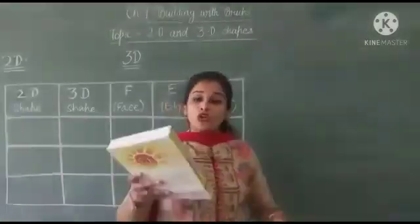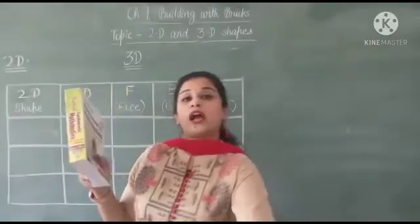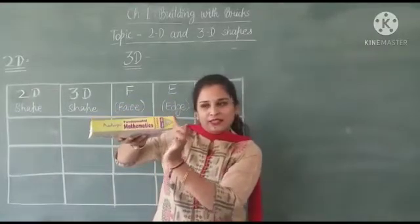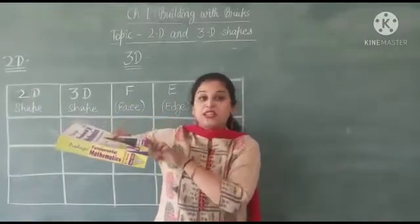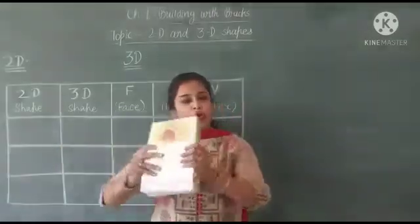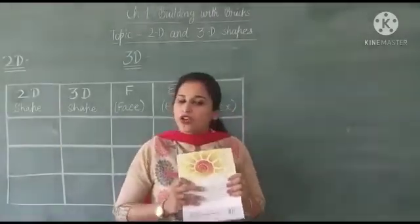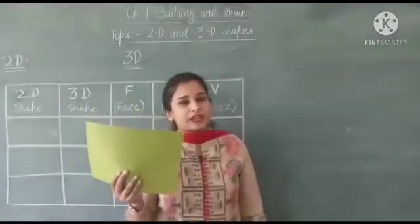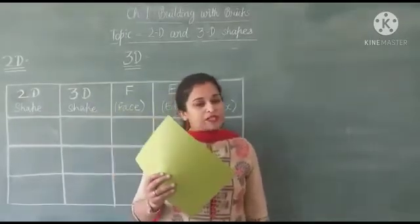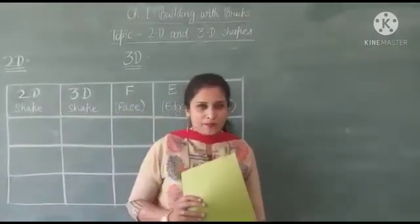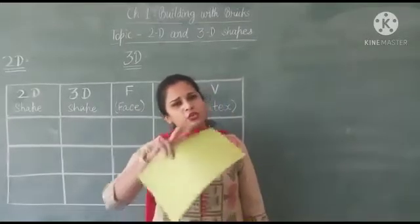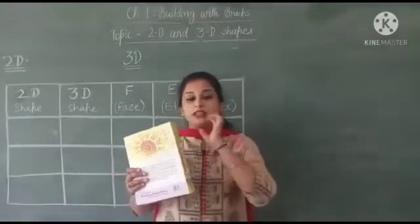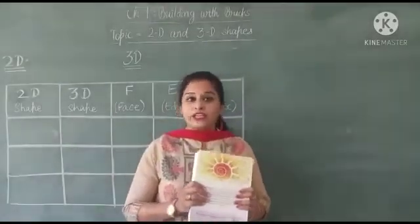And if I want to make this one, so what kind of things I need? This, this and this. Means I need three measurements for this book. So what kind of these two shapes? Where we need only two measurements, that are 2D shapes. Means two-dimensional shape, where are only two dimensions. And when we need three dimensions, three measurements,